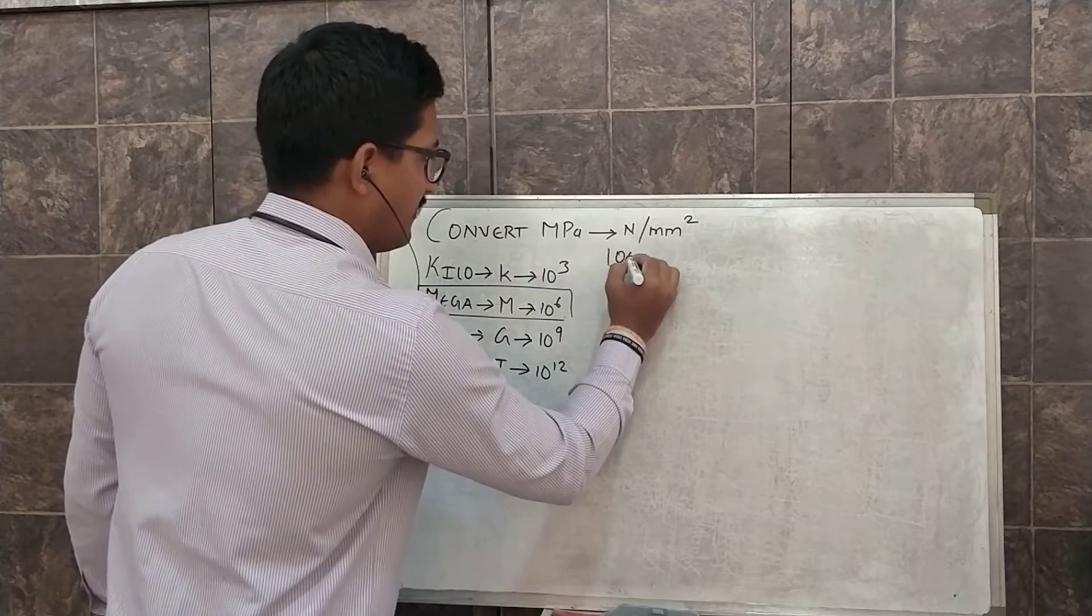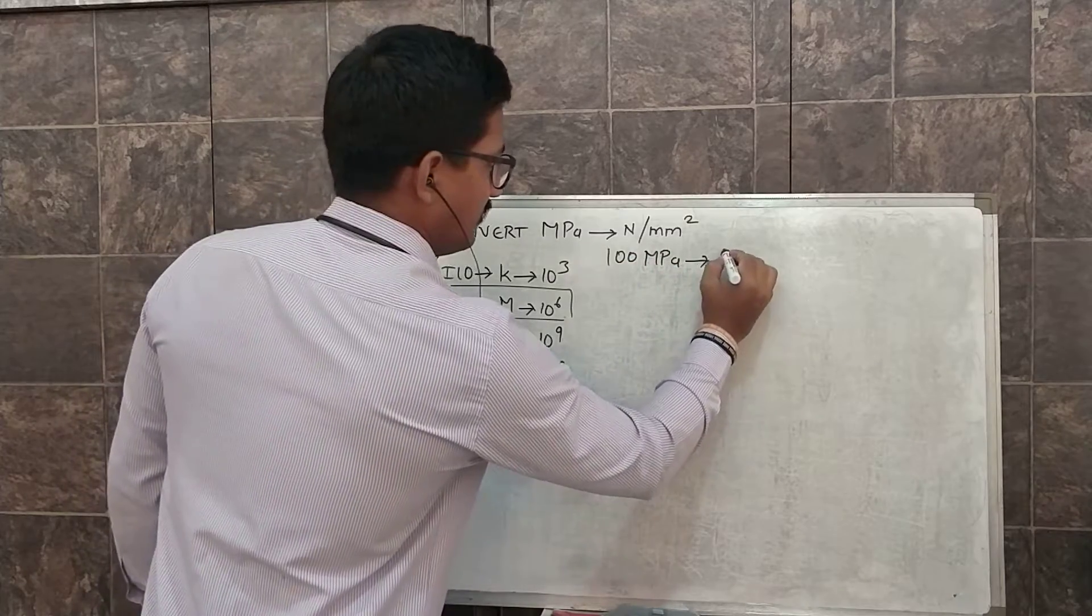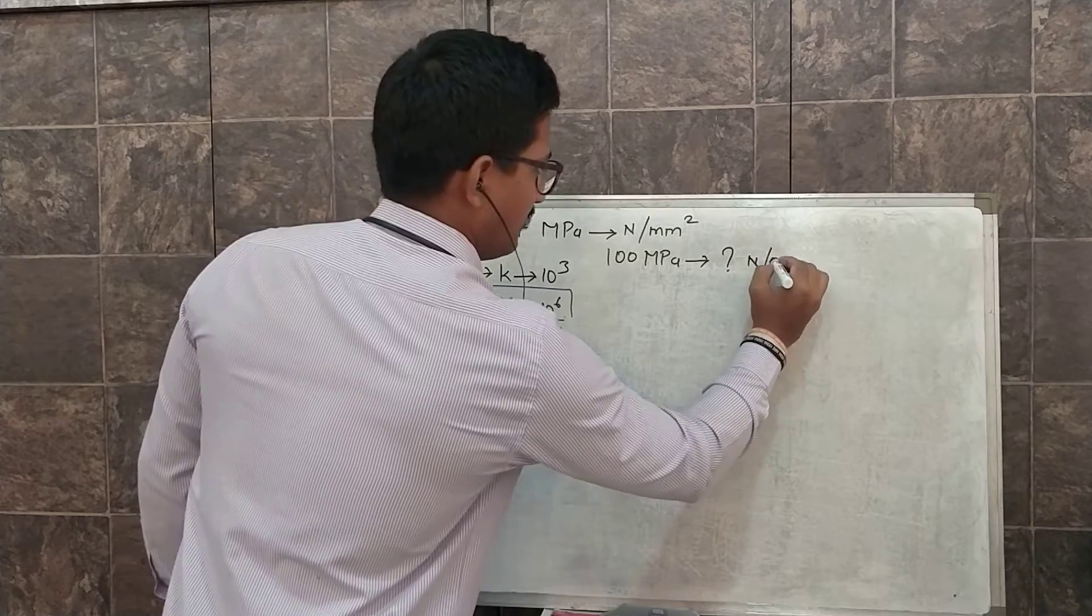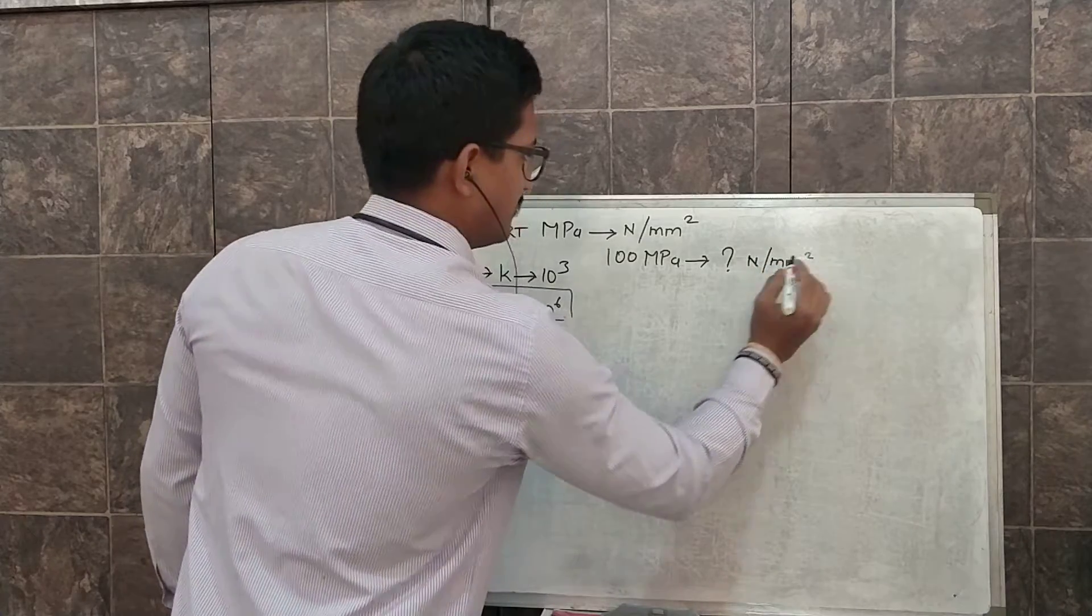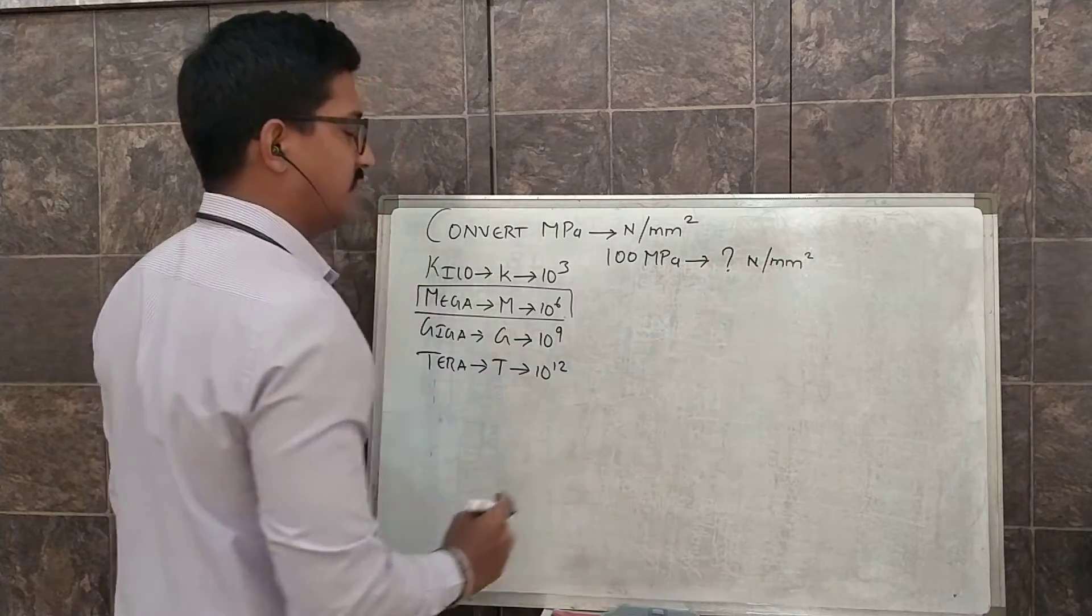Suppose for example we have to convert 100 megapascal into Newton per m². So our aim is to find this value: 100 megapascal is equal to how much Newton per m²?